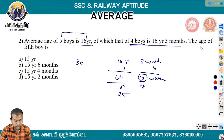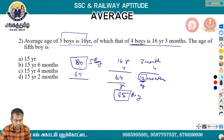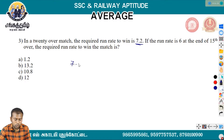The average of 5 boys is 5 years old. The average of 7.2 is over 1. The average of 20 is 24, and the average result is 144.